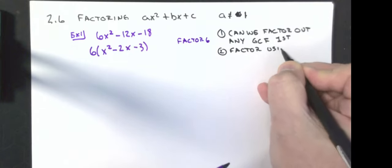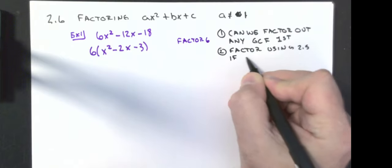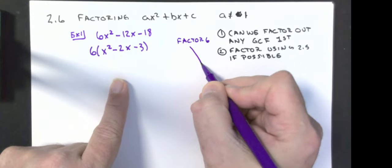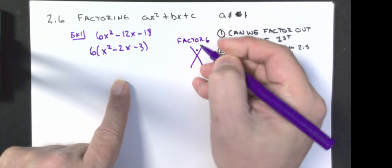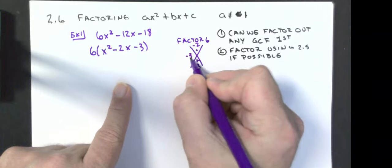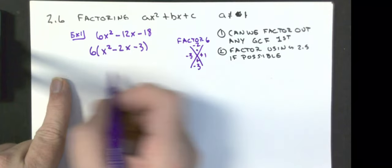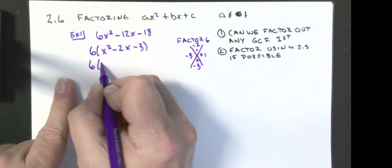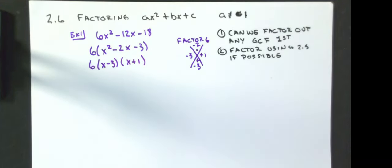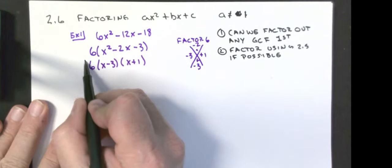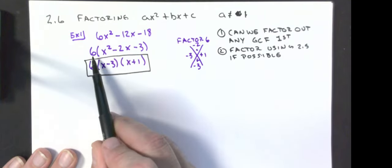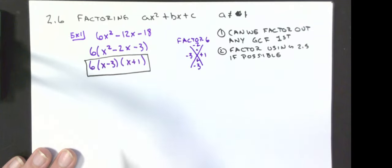Factor using the 2.5 method if possible. So I want two numbers that add to negative 2 and multiply to negative 3. Those would be negative 3 and positive 1. So I'm going to write 6 times (x minus 3)(x plus 1). That would be the final answer. If I were to multiply these two binomials together I would get what's inside that set of parentheses, and then multiplying each term by 6 gives me my original equation.